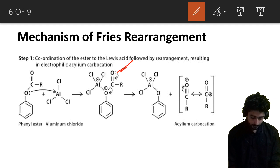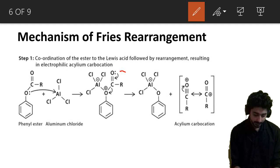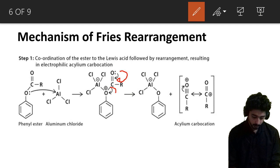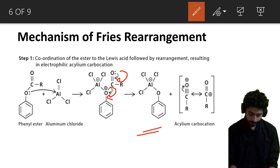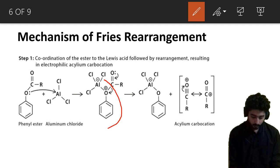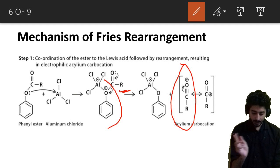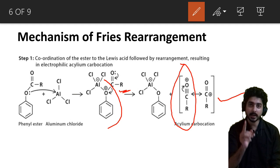Next, the carbonyl oxygen's lone pair shifts to form a triple bond with carbon, and the original oxygen-carbon bond breaks — the acyl group separates. The triple bond then converts to a double bond via tautomerism, and a positive charge appears on the carbon.